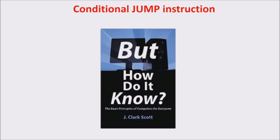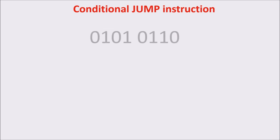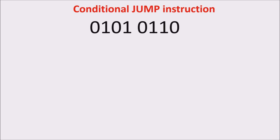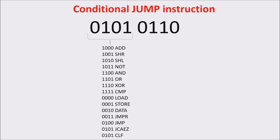The CPU we are talking about is the Scott CPU from the book 'But How Do It Know' by J. Clark Scott. An instruction code is a group of bits that instructs the computer to perform a specific operation. An instruction can be divided into two parts: the first part is called the op code — in the Scott CPU there are 15 different operations — and the second is called the address code, which usually defines the address where operands or data can be found.